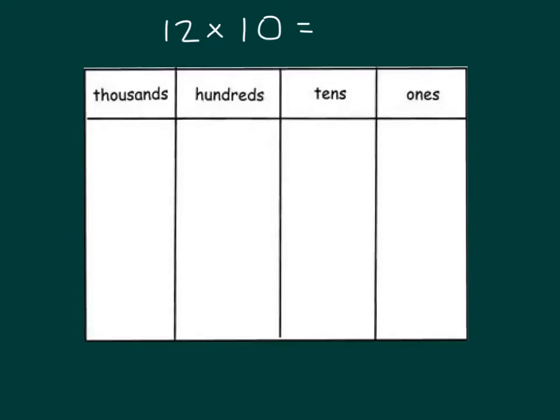Let's go ahead and solve this problem, 12 times 10. The first thing that we will do is that we will model 12 with number disks. So 12, we have 12 here. How many ones is that? Right, 2. We have 2 ones there. And how many tens is that? Right, 1. And then so that is a group of 2 ones there. And we have 1 ten.